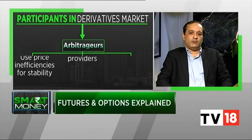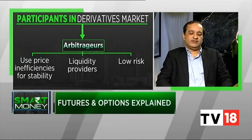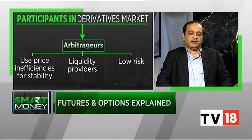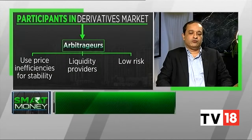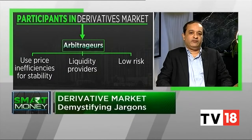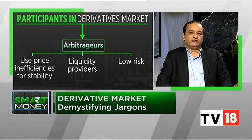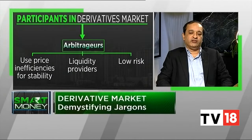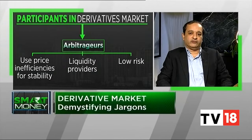The third category, which complements both hedgers and speculators, is the arbitrageurs — the lowest-risk participants. These are players who try to eliminate any inefficiencies created by the price movements of the first two categories. For example, if someone is aggressively bidding futures for a stock, the arbitrageur would buy the stock and sell the futures to ensure the cost of carry doesn't change too significantly. Arbitrageurs are low-risk but important liquidity providers in the market.